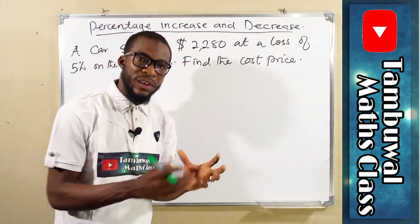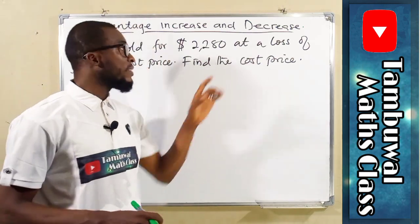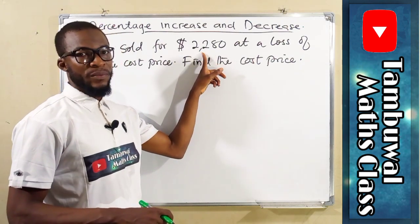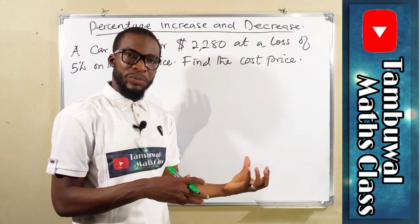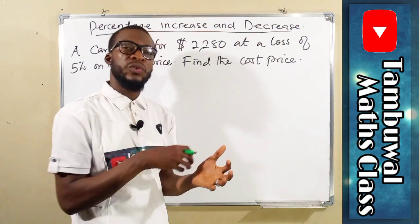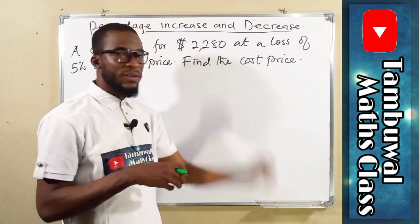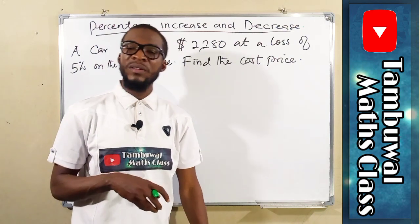Since there is a loss, it means that the cost price is higher than the selling price. And 5% of the initial price, which is the cost price, was removed from that cost price to arrive at this current amount, which is the selling price.